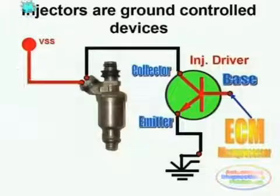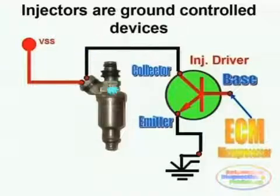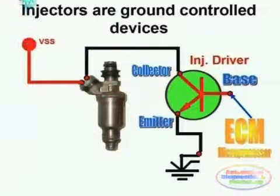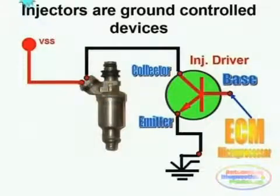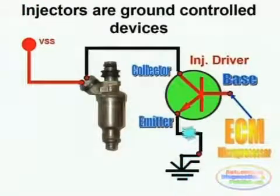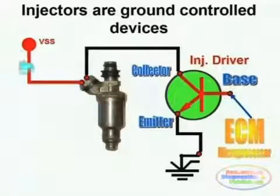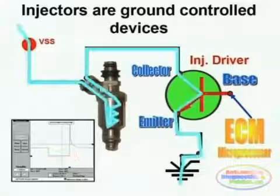This small pulse will cause the transistor to become conductive. Every time a pulse is applied to the transistor base lead, the driver or transistor closes, completing the circuit from negative through the injector coil to positive. By the ECM microprocessor applying a specific pulse to the transistor or driver base lead, a specific fuel delivery rate can be achieved.